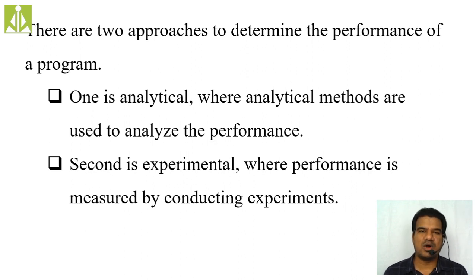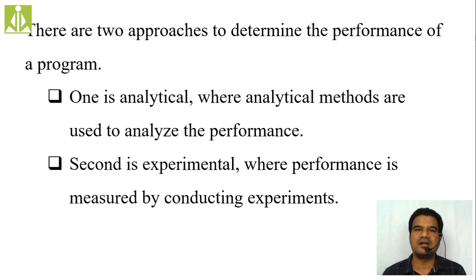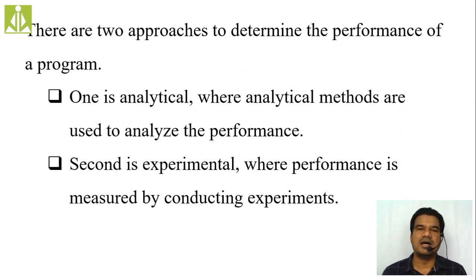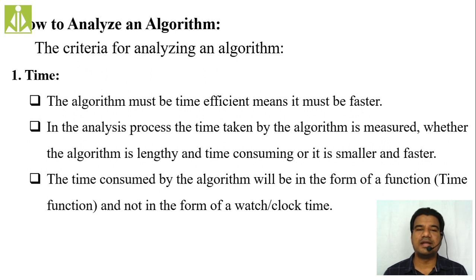To do experimental analysis of an algorithm, we convert it into a program, run it under a compiler, and observe how much time it took to compile and execute. So experimental analysis requires converting algorithms into programs. Whatever we do with pen and paper, we call that the analytical way of performance analysis.